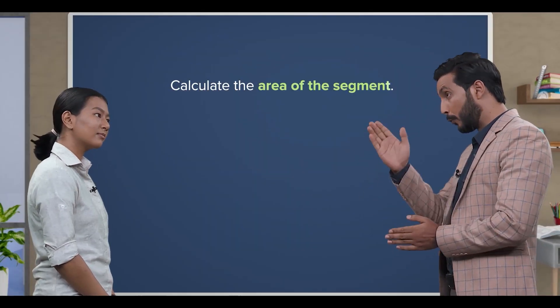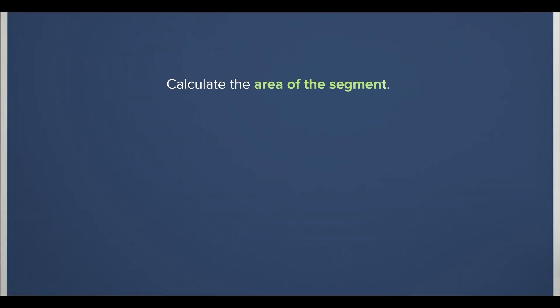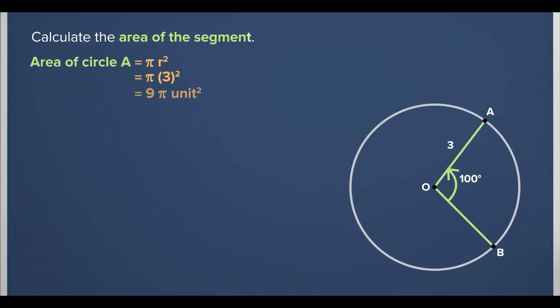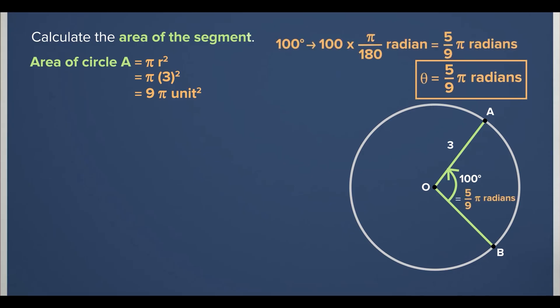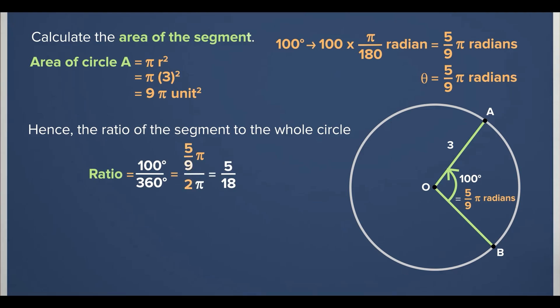This time, we will use radian in our calculations. We had earlier calculated that the area of the full circle is 9 pi units squared. We had also calculated that theta equal to 5 over 9 times pi radians. Hence, the ratio of the segment to the whole circle would be 5 over 18. Notice that this ratio is exactly the same as 100 degrees over 360 degrees. Therefore, the area of the sector AOB would be the ratio of that sector times area of the circle. And as expected, the area of the sector is 5 over 2 times pi units squared.